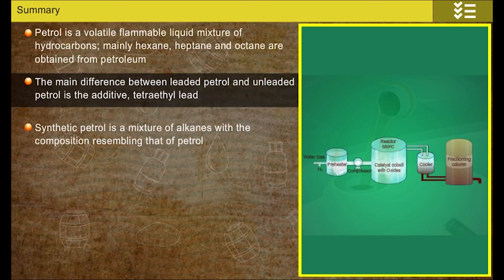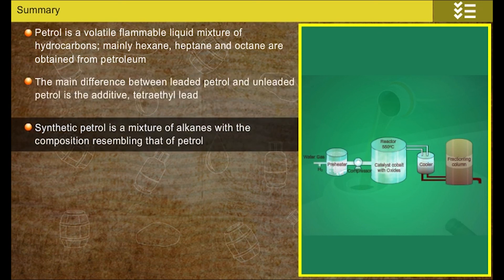The main difference between leaded petrol and unleaded petrol is the additive tetraethyl lead. Synthetic petrol is a mixture of alkanes with the composition resembling that of petrol. This is obtained artificially from coal.